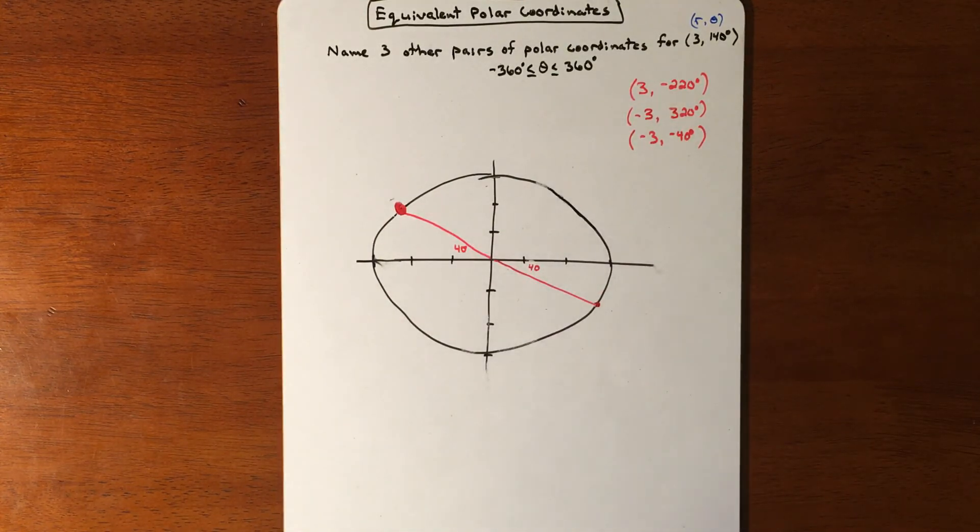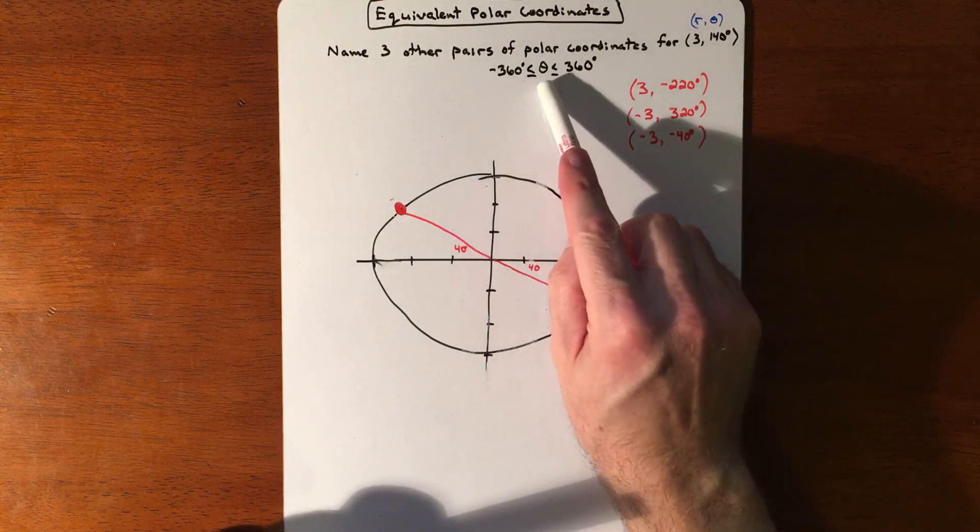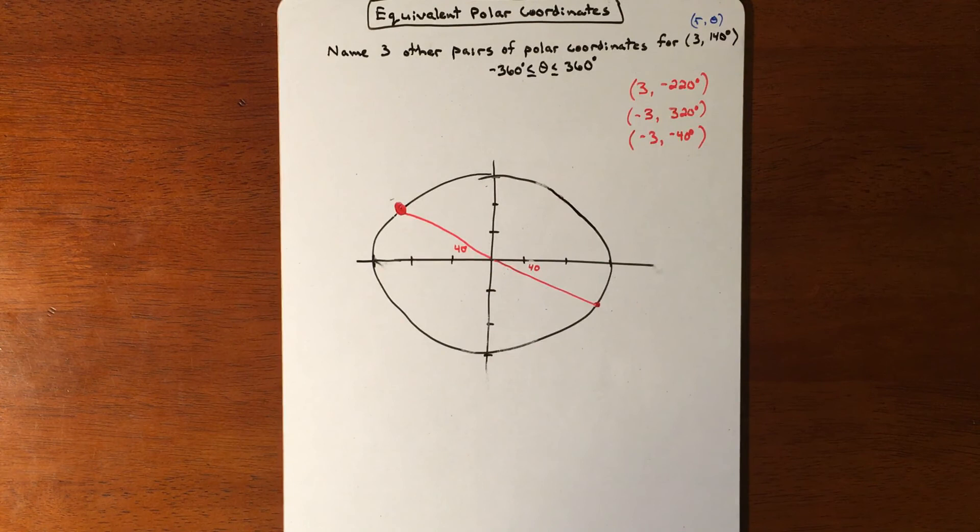So that's a couple ways. And technically there's an infinite amount of these things because you could do a bunch of coterminal angles. That's why your theta typically gets locked in between 360 and negative 360.